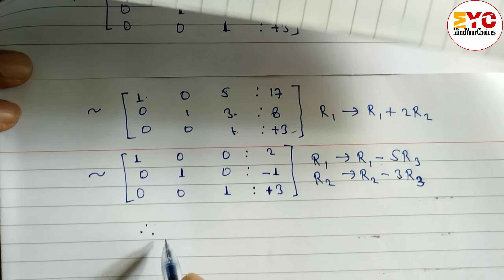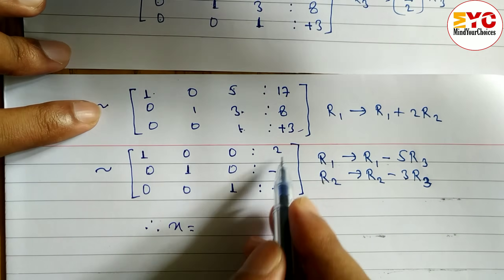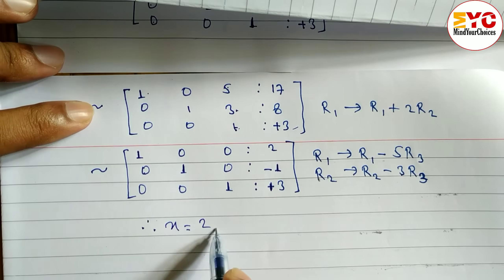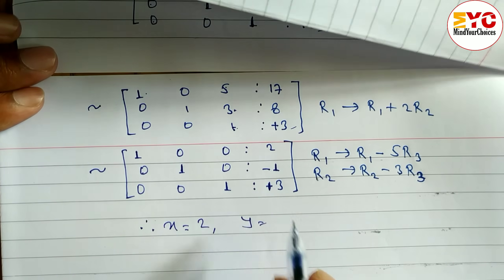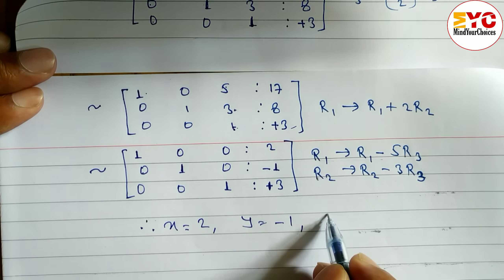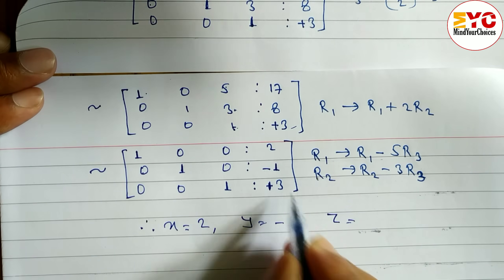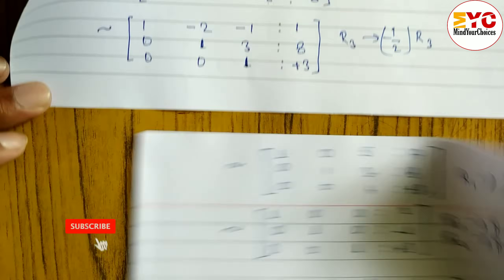Therefore, the values are: x is equal to 2, y is equal to minus 1, and z is equal to 3. Hope you understand this video on solving equations by the row equivalent matrix method.